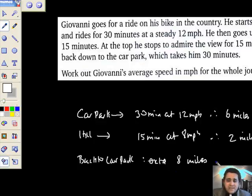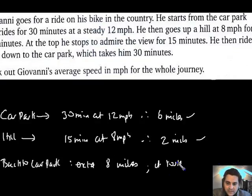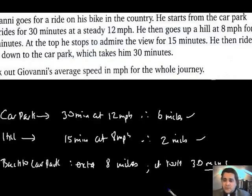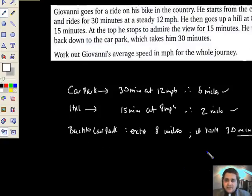Alright, how long did it take? It took 30 minutes, so it's obviously bombing it back down the hill and it's flying at a great rate of knots. And that's what we've got so far. Now to work out the average speed we need the total distance and the total time.